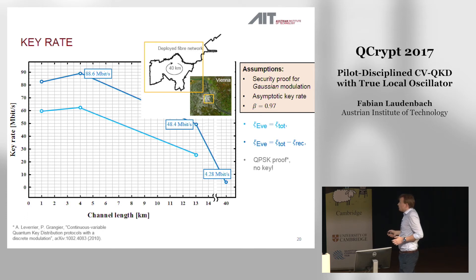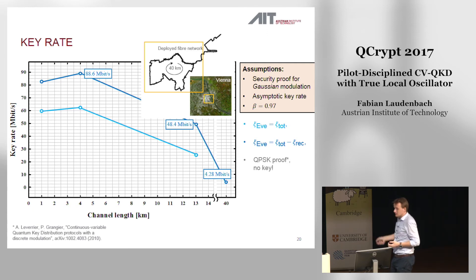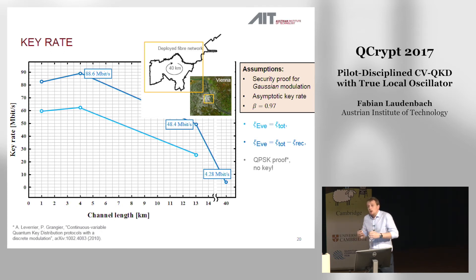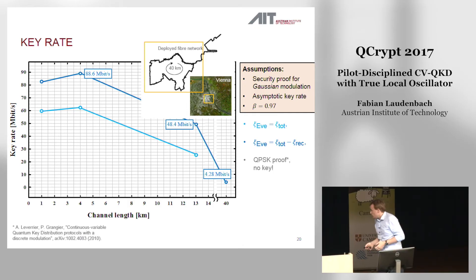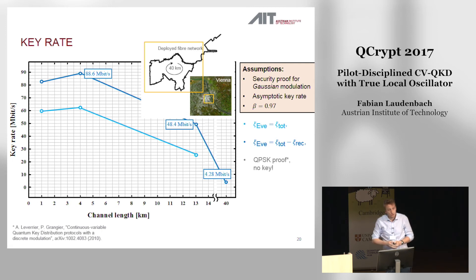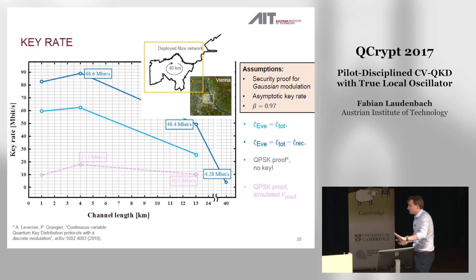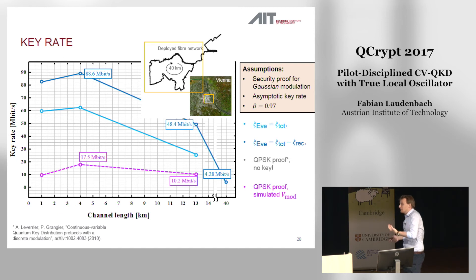There is a QPSK security proof available in the literature; however, it's not a very tight one. We found that if we apply our measurements to this QPSK proof, we obtain no key at all. This is not because the noise was not low enough — it's rather because we operated at a too-high SNR, as this security proof requires very low photon numbers, roughly on the order of 0.1 photons at the transmitter. However, we optimized the modulation variance and were able to demonstrate a non-zero key over 13 kilometers using this strict QPSK proof.